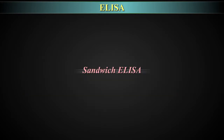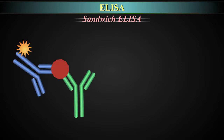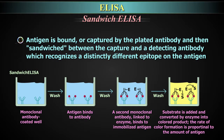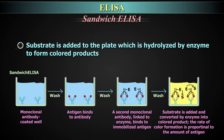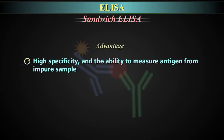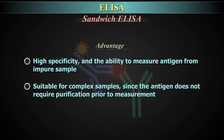Sandwich ELISA. The differentiating feature of a sandwich ELISA is the adsorption of a capture antibody to the plate. Antigen is bound or captured by the plated antibody and then sandwiched between the capture and a detection antibody, which recognises a distinctly different epitope on the antigen. Finally, substrate is added to the plate, which is hydrolyzed by enzyme to form coloured products. Advantages: high specificity and the ability to measure antigen from impure samples; suitable for complex samples since the antigen does not require purification prior to measurement.